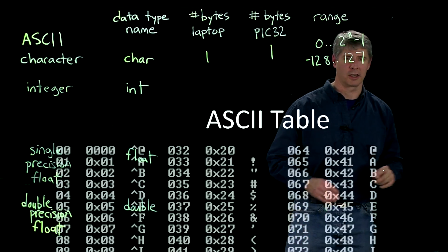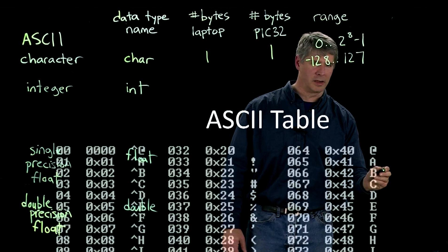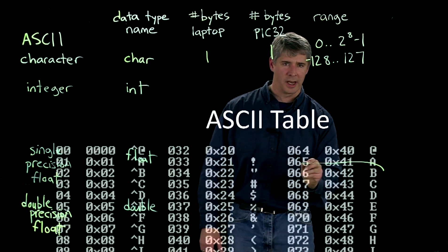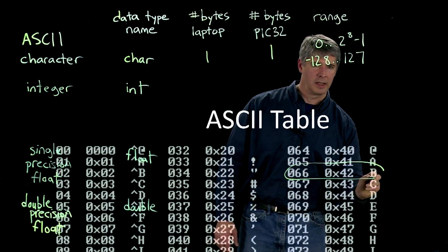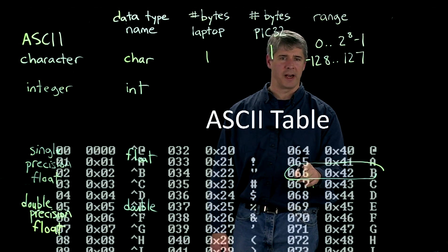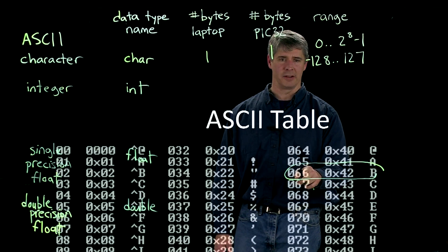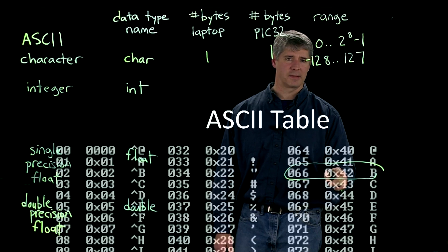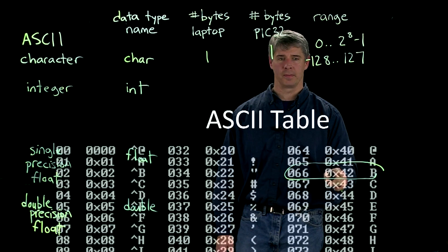So, let's take a look. Here's the ASCII table, and we can zoom in here on one particular value. Let's look at B. So, the character B here is represented by the decimal value 66, or the base 10 value 66, or the hex value 42.